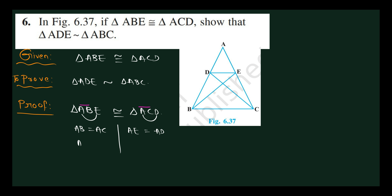So AB by AC equals one, and AD by AE equals one. Things which are equal to the same thing are equal to each other. Therefore AB by AC equals AD by AE.